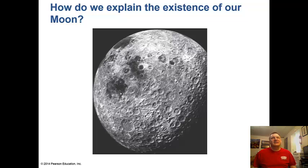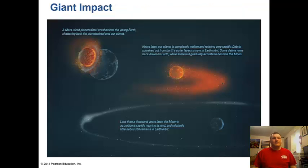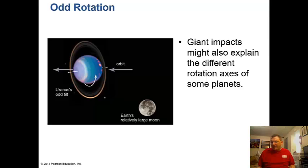How do we explain the existence of our moon, which we call Luna? At one point there were four hypotheses that tried to explain the formation of the moon. The one that seems to fit all the computer models and observations is a giant impact. We suspect an object the size of Mars, one-third the size of Earth, hit the Earth in a glancing blow and blew off material into space, which then recoalesced to form the moon. Some giant impacts may have explained the different rotation axes of some planets like Uranus.